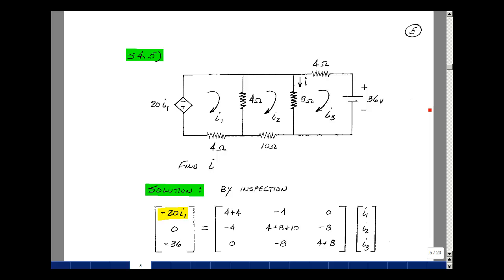This lesson deals with Supplemental Problem 4.5. You can find this problem in the ECE 201 e-book in the Chapter 4 Supplemental Problems on page 5. Given this planar circuit with one independent voltage source, one dependent voltage source, and some resistors, can you solve for the current I?